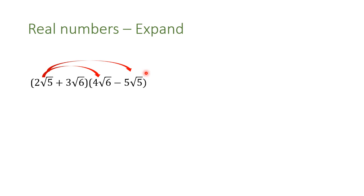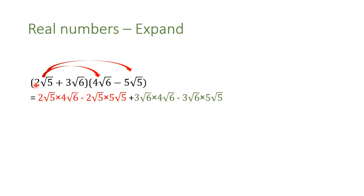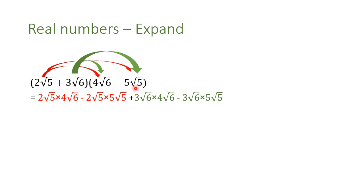Take attention of the signs. This is a plus times a plus — positive times positive, the answer is positive. This is positive and this is negative — positive times negative gives negative. And 2 radical 5 times 5 radical 5. We haven't finished yet; we need to multiply also 3 radical 6 by the first and second parts of the parenthesis.